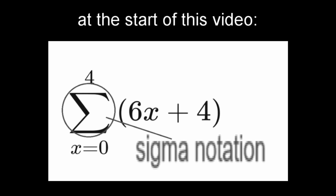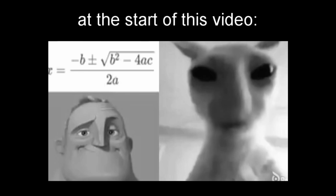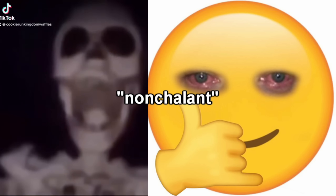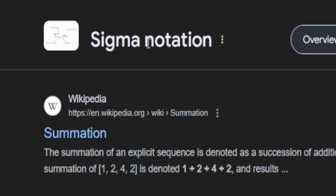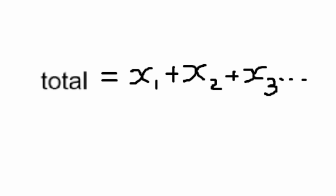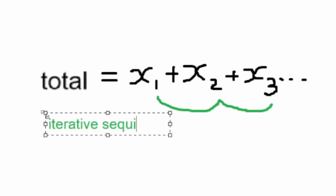At the start of this video I did promise to cover sigma notation, and I'm gonna be honest, this section's gonna be pretty nonchalant. What is sigma? It is a Greek letter that mathy boys use as the notation for summation — the total you get from adding together all numbers in an iterative sequence.